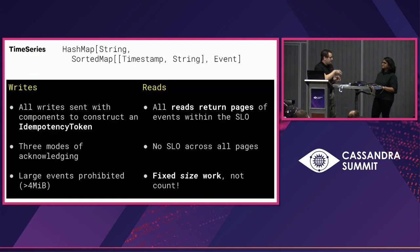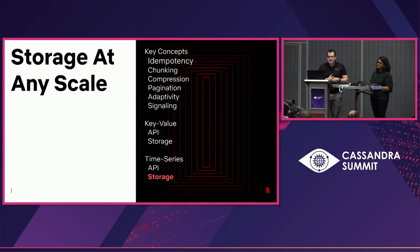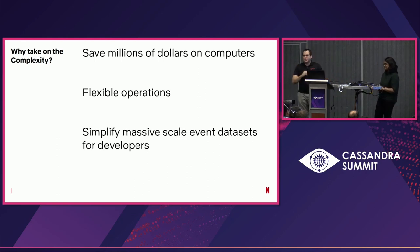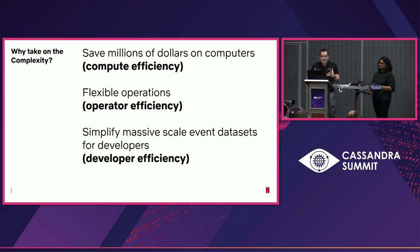Wrapping back, we see all those concepts in time series: idempotency tokens, different modes of acknowledgement, and fixed size work. I want to preface the complexity ahead with the impact: this project saved millions of dollars for Netflix, allowed operators to sleep better at night, and massively simplified massive-scale data sets. We achieved compute efficiency, operator efficiency, and developer efficiency. At Netflix, the complexity was worth it.